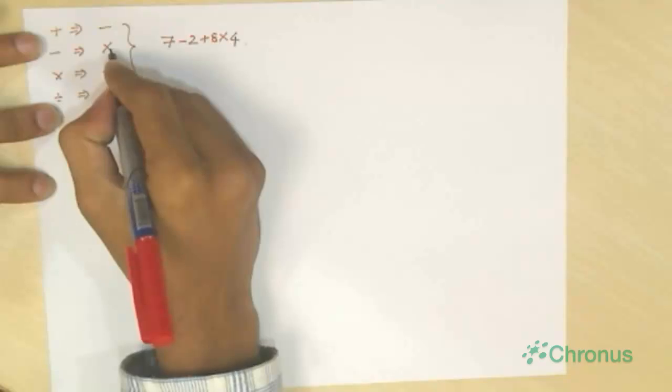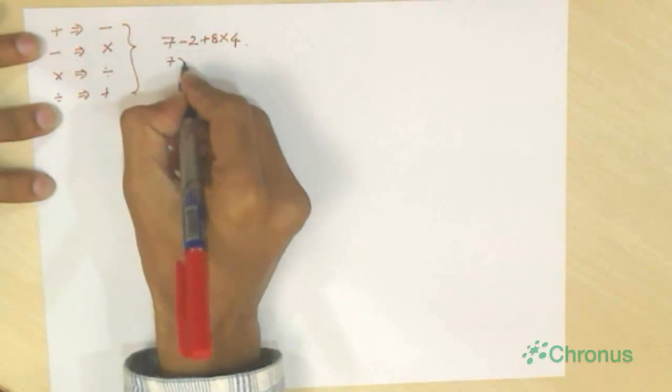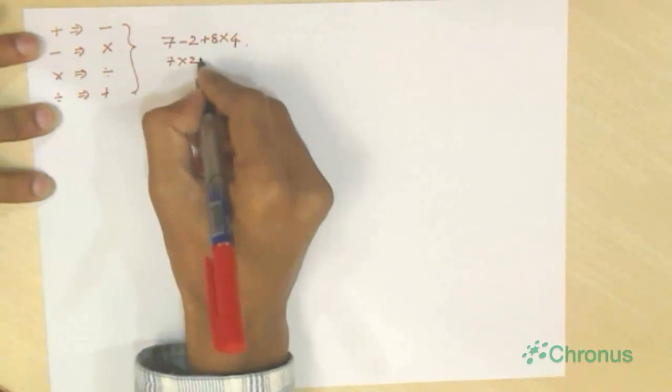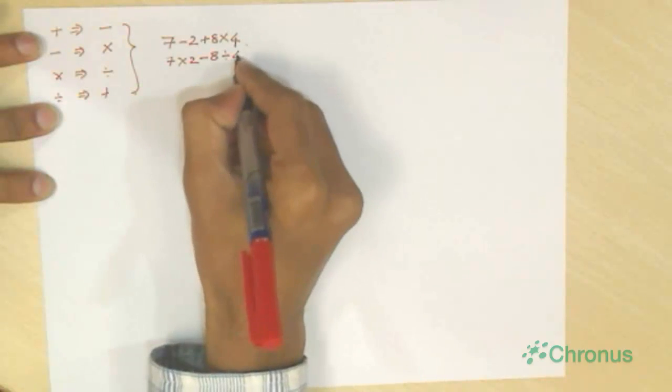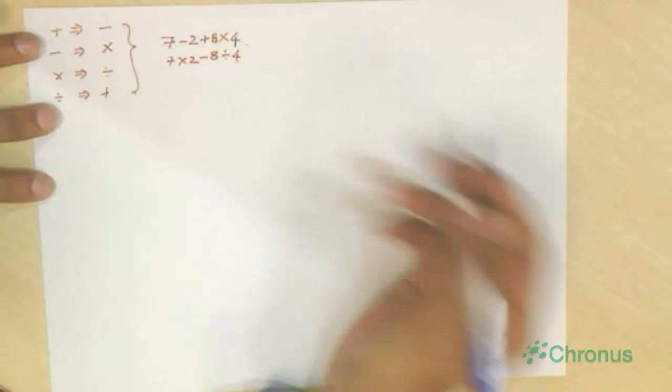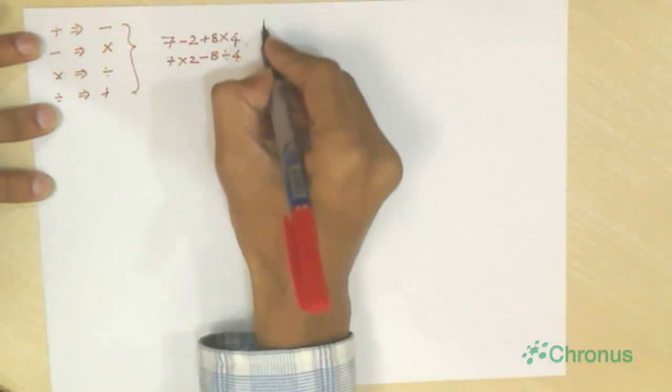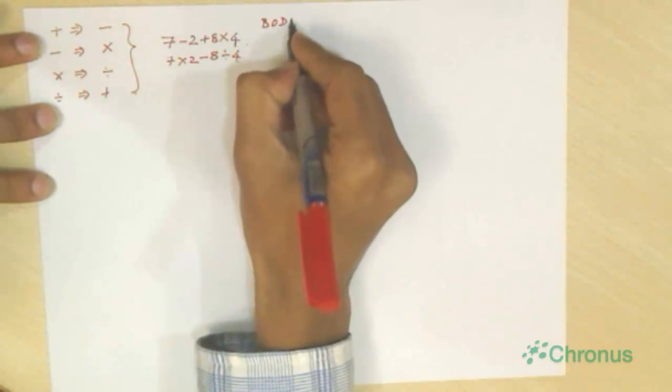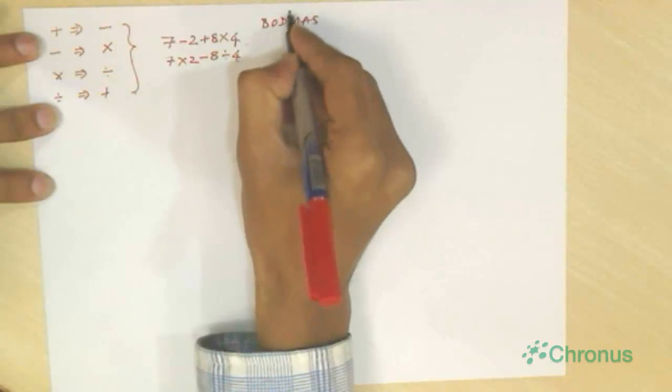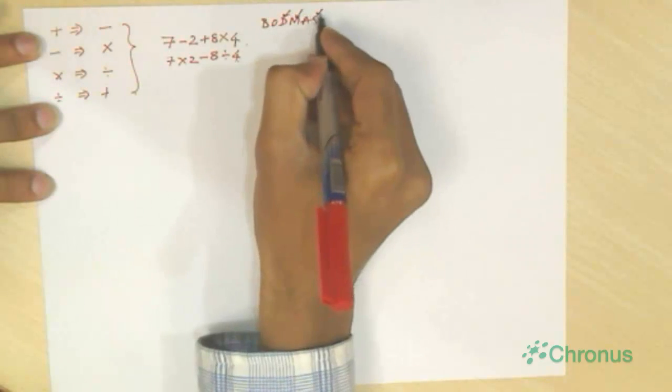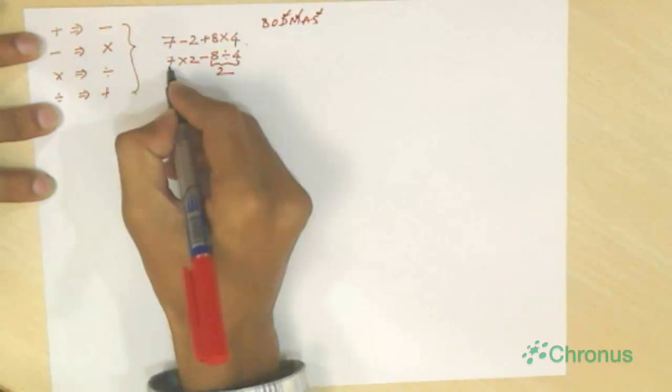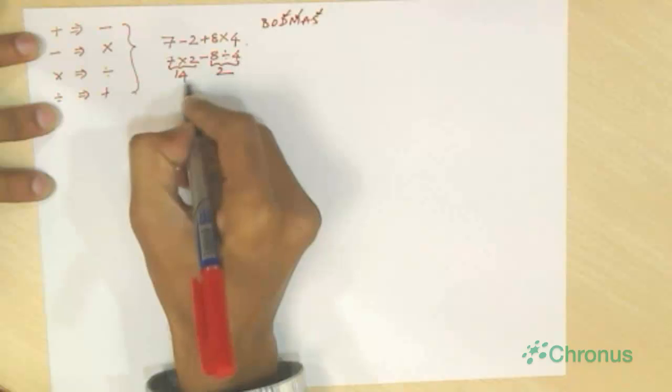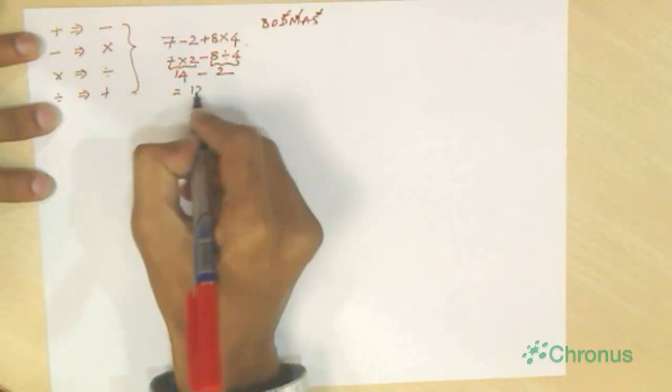Minus represents multiplication. So it is 7 into 2, plus represents minus 8, and into represents divided by 4. And going with BODMAS rule, first division, then multiplication, then subtraction. So first division, 8 divided by 4 is 2, and then multiplication 7 into 2 is 14, and 14 minus 2 is 12.